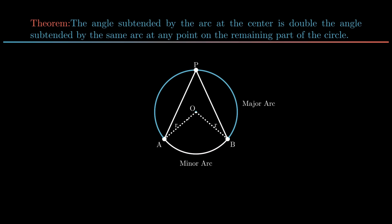Join point P to points A and B. To prove angle AOB is twice angle APB, construct a line from point P passing through point O. From the figure, angle APB can be written as the sum of angle 1 and angle 2, while angle AOB can be written as the sum of angle 3 and angle 4.